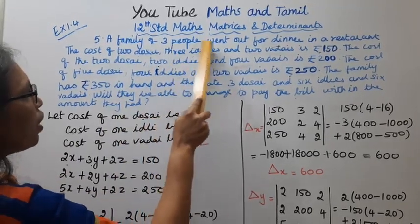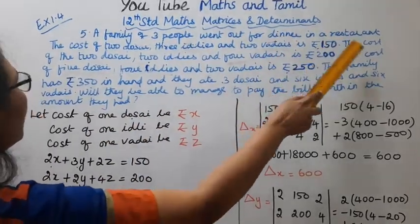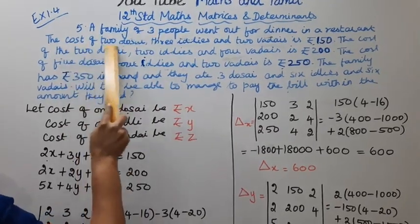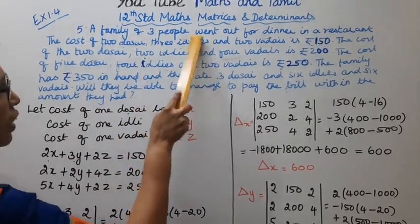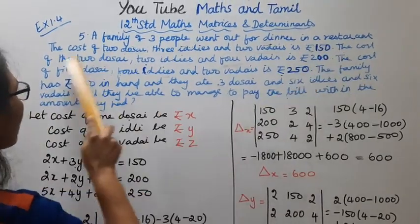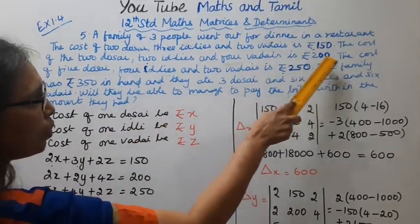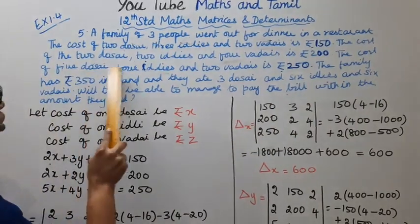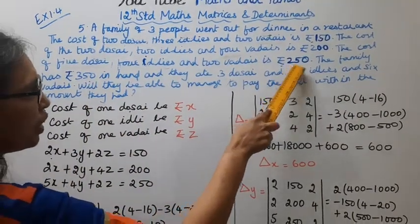A family of 3 people went out for dinner at a restaurant. The cost of 2 dosai, 3 idlis and 2 vadais is Rs. 150. The cost of 2 dosai, 2 idlis and 4 vadais is Rs. 200. The cost of 5 dosai, 4 idlis and 2 vadais is Rs. 250.